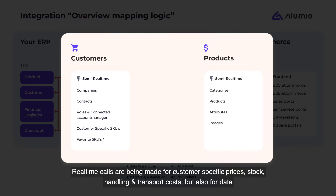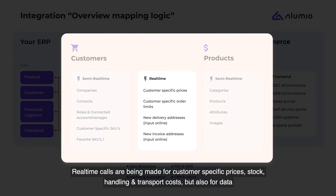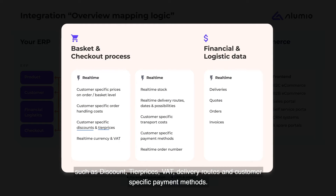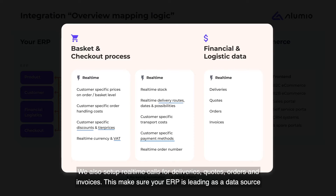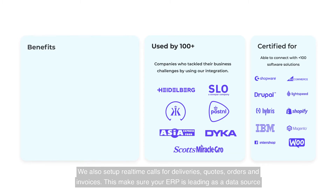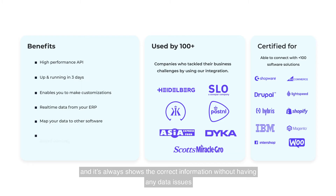Real-time calls are being made for customer-specific prices, stock, handling and transport costs, but also for data such as discount, tier prices, VAT, delivery routes, and customer-specific payment methods. We also set up real-time calls for deliveries, quotes, orders, and invoices. This makes sure your ERP is leading as a data source and always shows the correct information without having any data issues.